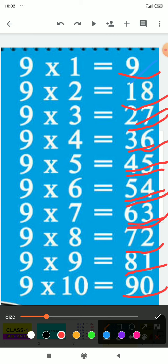9 times 7 is 63, 9 times 8 is 72, 9 times 9 is 81, 9 times 10 is 90.